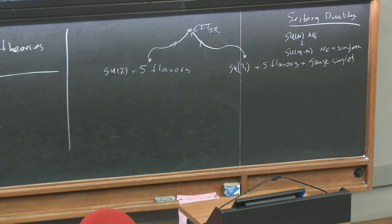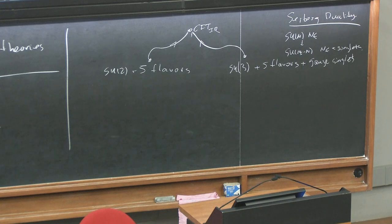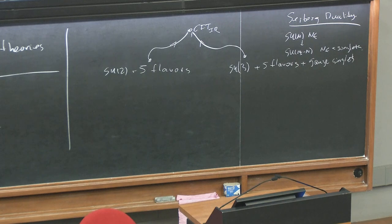There might be more than two theories flowing to the same fixed point—some equivalence classes. You can have a very complicated network of flows, where you start from several different theories, flow to another theory, and then flow to a variety of theories depending on which deformations you turn on. Some of these flows might be equivalent again. There is a question of what the organizing principle is. This is question number two.